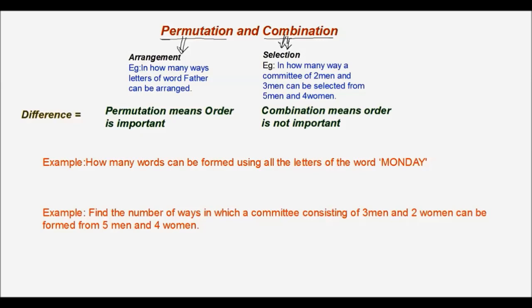Permutation is nothing but arrangement. Whenever in a question it is asked in how many ways letters of a word can be arranged, that is permutation. And whenever selection is coming in the question — like how many ways a committee of two men and three women can be selected from five men and four women — that is combination. The major difference is: permutation means order is important, and combination means order is not important.